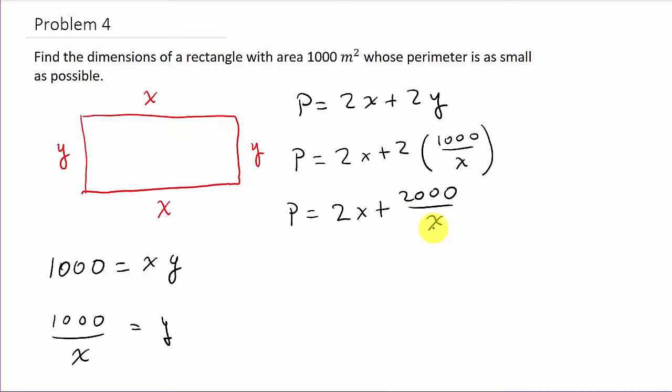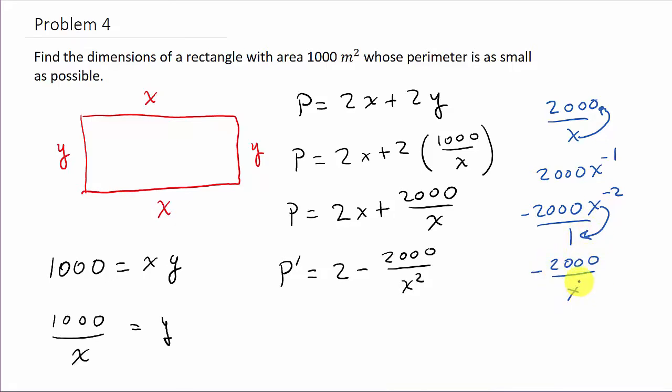Alright, now we need to take the derivative. Well, the derivative is 2, derivative of 2x is 2, minus 2000 over x squared. Okay, that's the derivative of this. And just to show you real quick, if you have 2000 over x, well, how would you take the derivative? Well, we would move this up to the numerator, so that would be 2000 times x to the negative 1. And then we use the power rule. The negative 1 comes down. That's negative 2000x. Subtract 1. That's negative 2. And then we move this back down to the denominator, so that's negative 2000 over x squared. And there's your derivative.